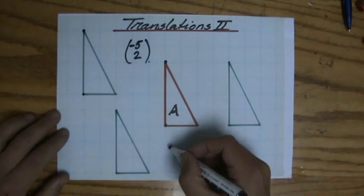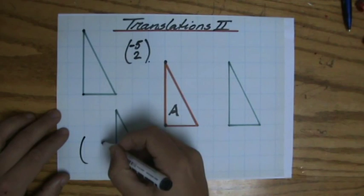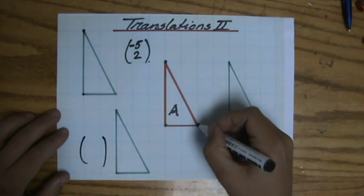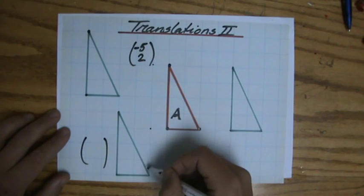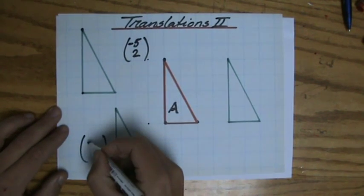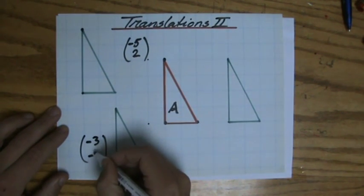Now this one. What is the column vector there? Let me put it here. Let's do that point for a change. It goes one, two, three. One, two, three down. So minus three, minus three.